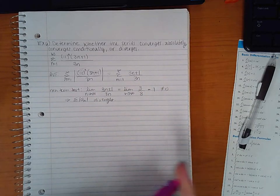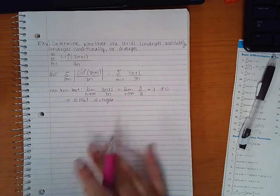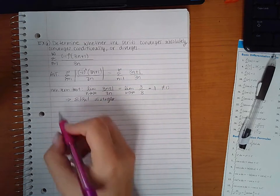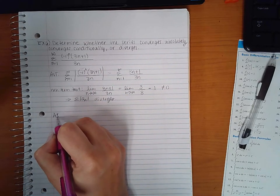Which means I need to go back to the original and find out whether it converges or diverges. So let's go back to the original and look at that. It is an alternating series, so I'm going to apply the alternating series test.